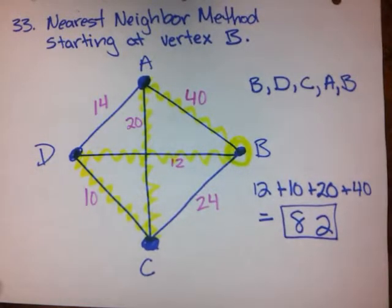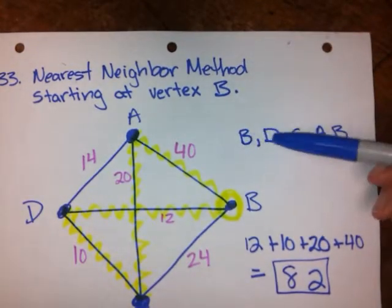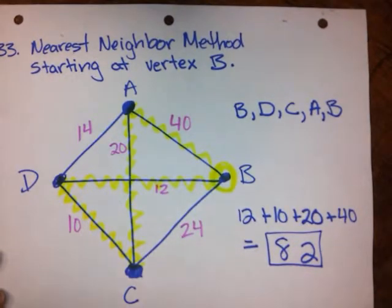So the inexpensive Hamilton circuit by using the nearest neighbor method turns out to be B, D, C, A, B with a cost of 82.